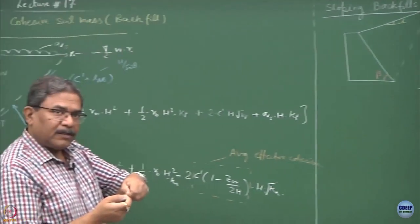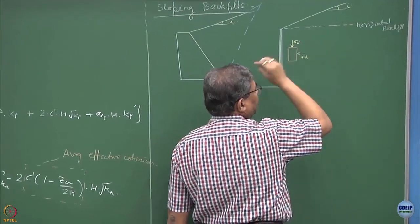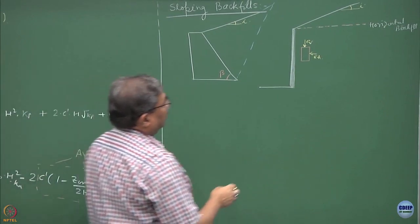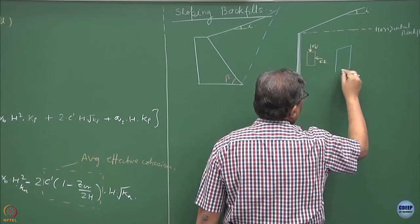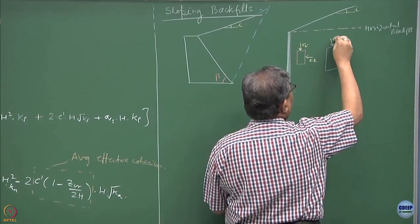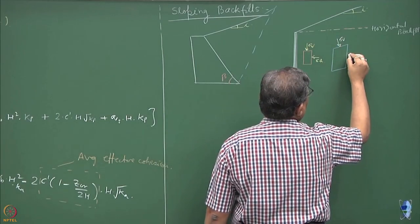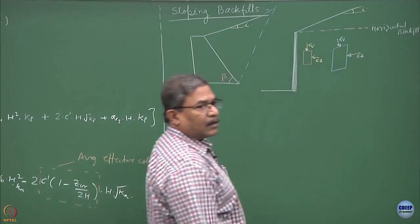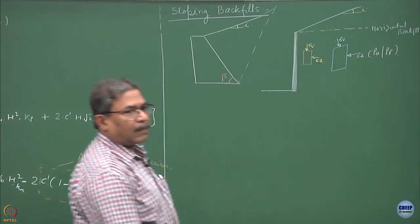The backfill has got inclined with an angle of i, so geometrical compatibility is lost and the new geometrical compatible system would look like this. Your sigma v is acting perpendicular to the plane not in the vertical direction. This is sigma h which could be Pa or Pp.